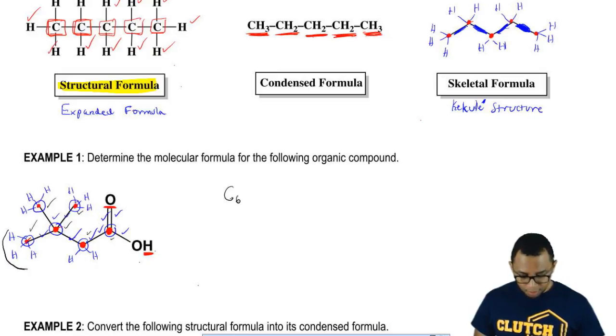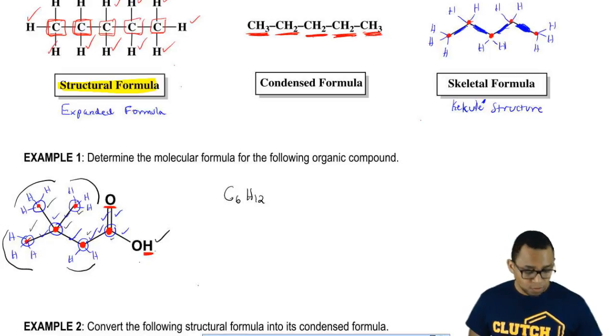Next hydrogens, we have three, six, nine, eleven, twelve. How many oxygens do we have? We have two oxygens.